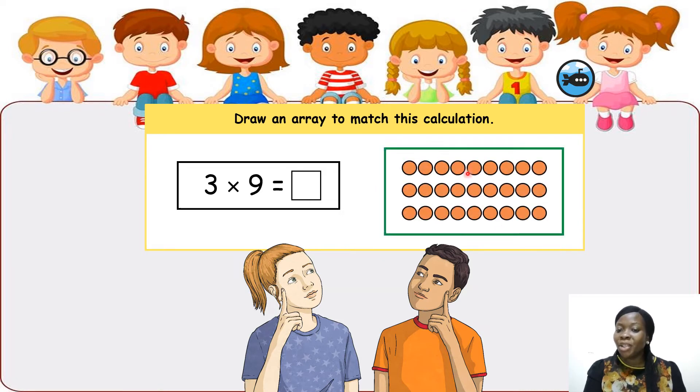Welcome back. Does your picture look like this? Three groups of 9. We have 3 rows, 1, 2, 3 and on each row we have how many counters? 1, 2, 3, 4, 5, 6, 7, 8, 9. On each row we have 9 counters. So 3 times 9 is 27.